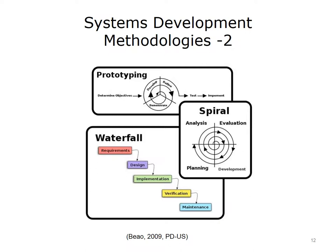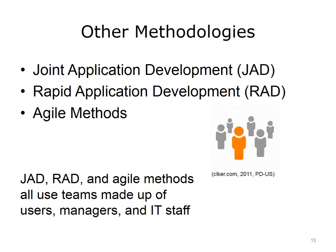Here are diagrams showing the process of development using the waterfall method, the spiral method, and prototyping in conjunction with the spiral method. The diagram of the waterfall method displays its linear, sequential nature, while the spiral and prototyping methods diagrams represent the iterative approach of these models.